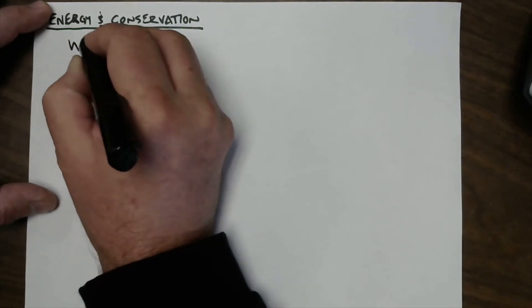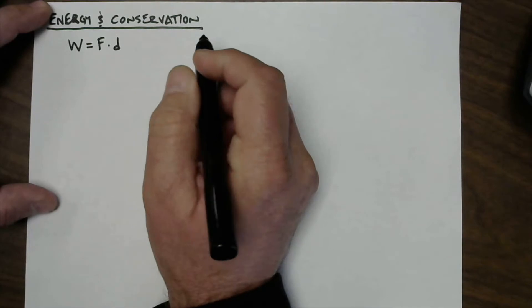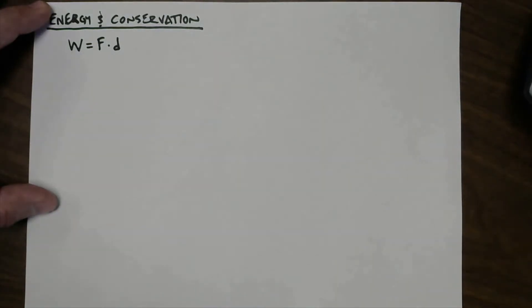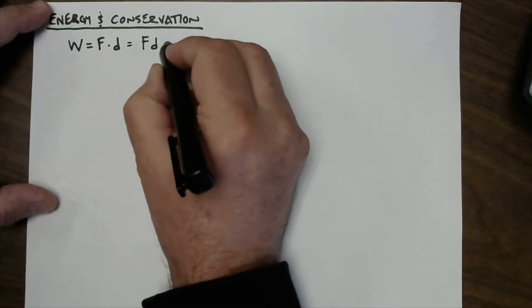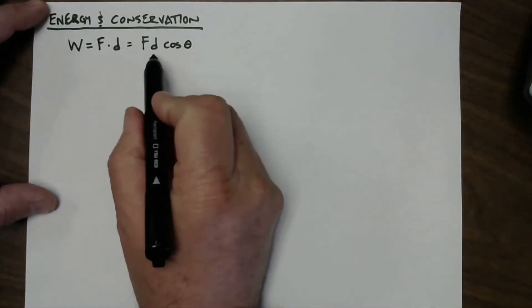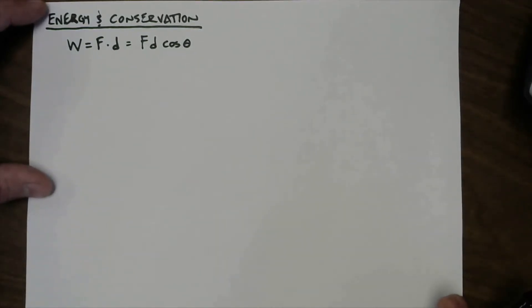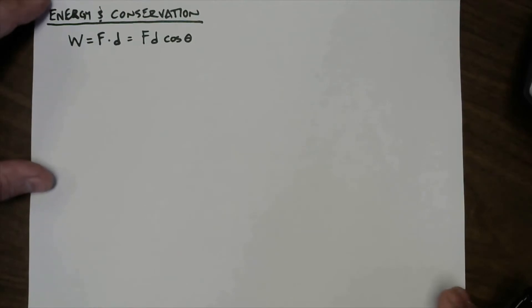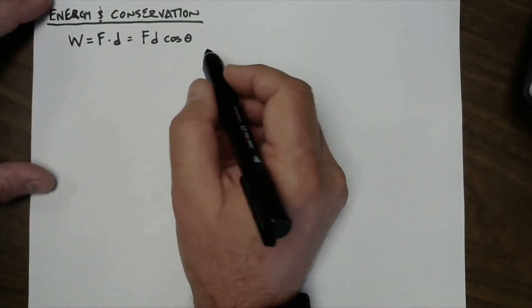Let's just go ahead and encapsulate what we've learned so far. Work is a force in action. It requires a force and a displacement, which I'll abbreviate with a D. This is a dot product, which is a vector thing, which really means you could just do F times D times the cosine of the angle between them. There has to be a causal relationship between the force and the displacement. You can't just go willy-nilly multiplying forces by displacements.